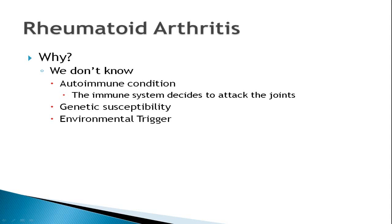Why does rheumatoid arthritis happen? Ultimately we still don't know the answer. We do know it's an autoimmune condition, meaning the immune system decides to attack the joints — why that is remains unclear. We believe there is a genetic component that makes someone more susceptible, but not everyone with certain genetic makeup gets the disease. Likely there is some sort of environmental trigger, perhaps an infection we have yet to identify, which allows that genetic makeup to become active and cause the disease.